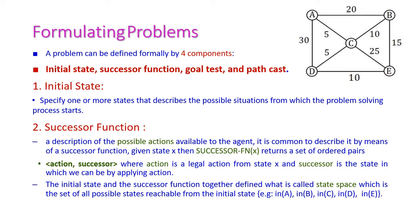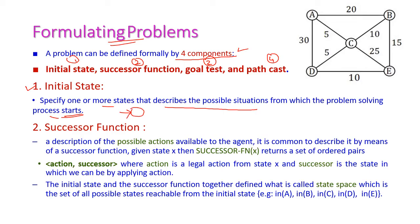A problem can be formulated with four components. The first component is the initial state, which specifies one or more states that describe the possible situation from which the problem solving process starts — that is, the starting point of problem solving. In our problem, the initial state is A.